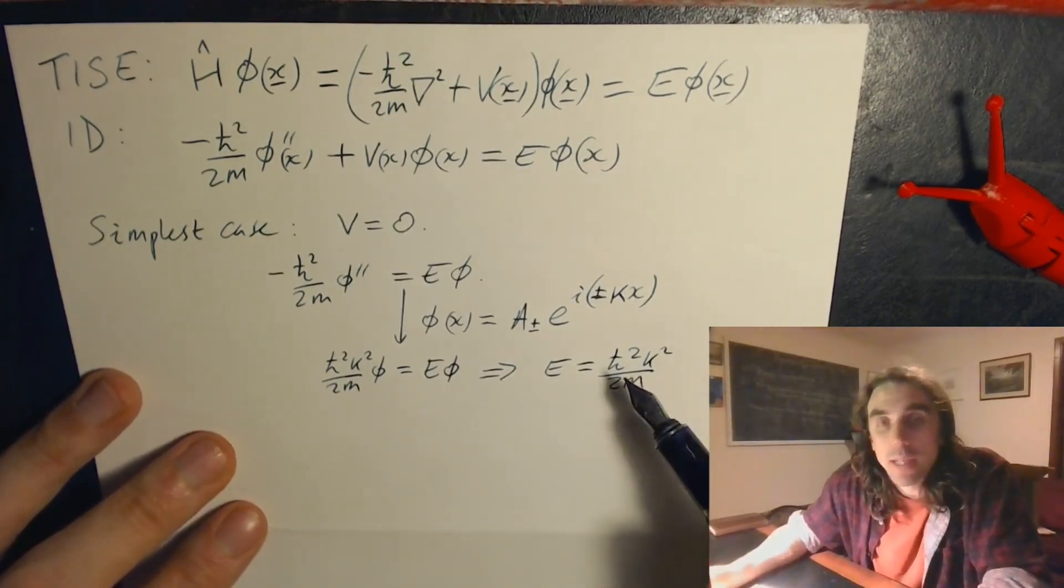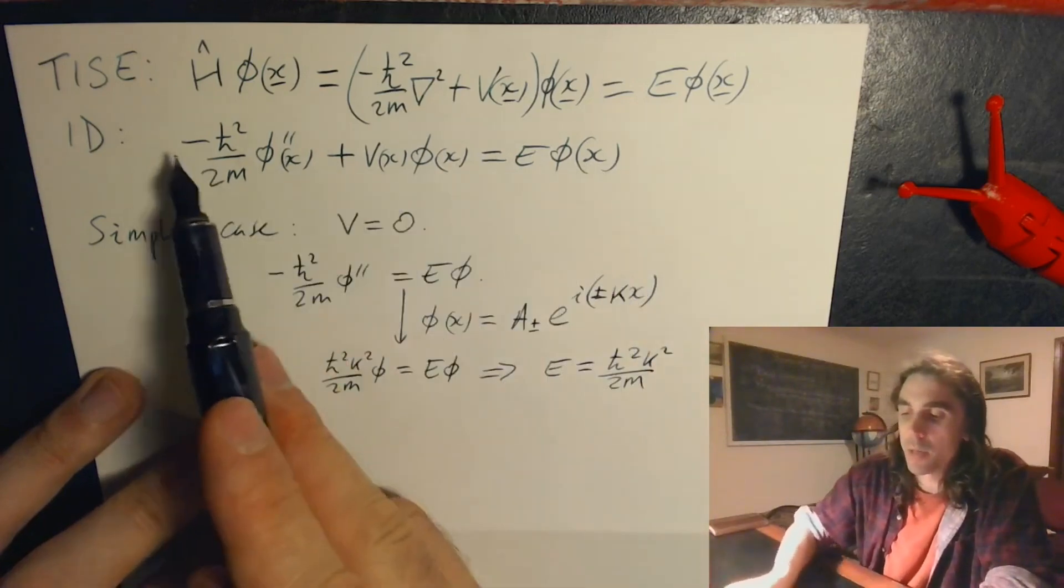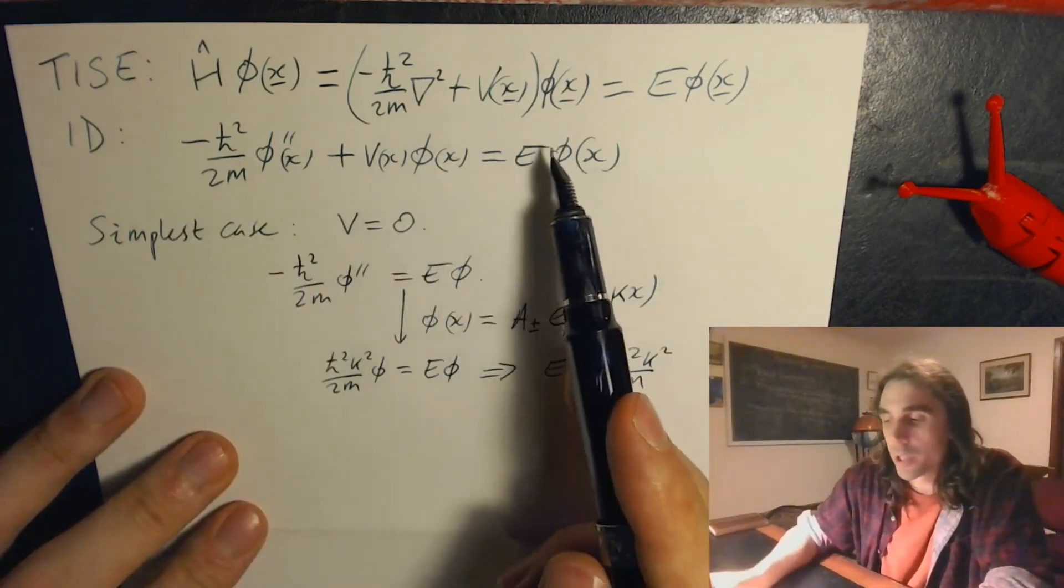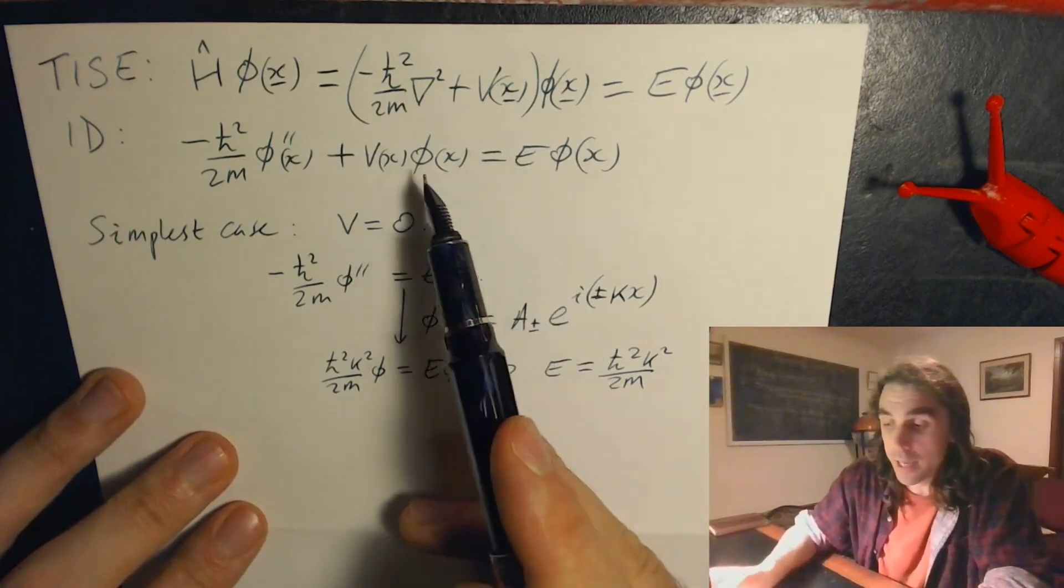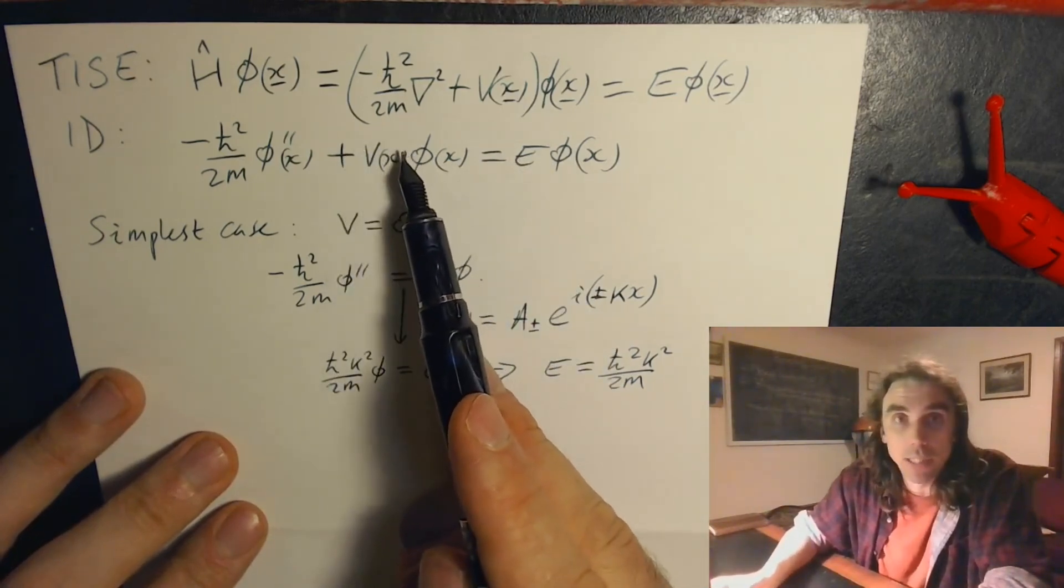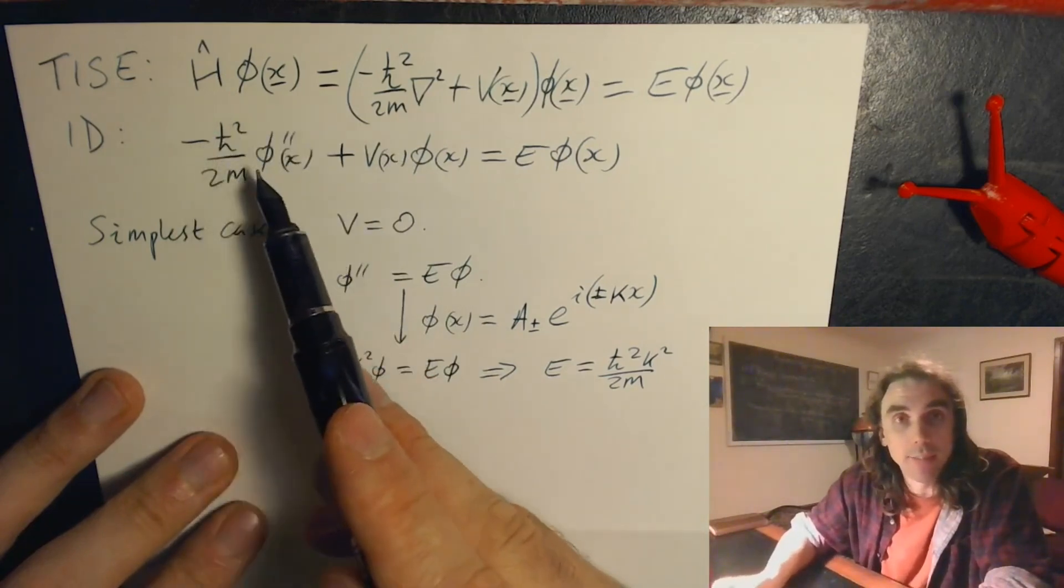When we take a look back at the problem we're trying to solve, here's the time-independent Schrödinger equation in 1D, we're trying to solve for the energy eigenvalues. Energies of course have two contributions: the potential energy term, which is here, and the kinetic energy term, which must be this thing over here.